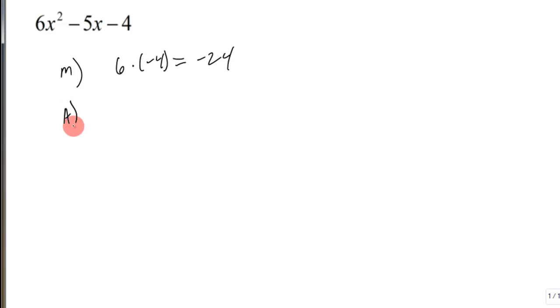The more challenging part comes from the A, because you've got to look at the factors of negative 24 that will also add up to negative 5. Now add up also means adding negative numbers, so subtractions as well.